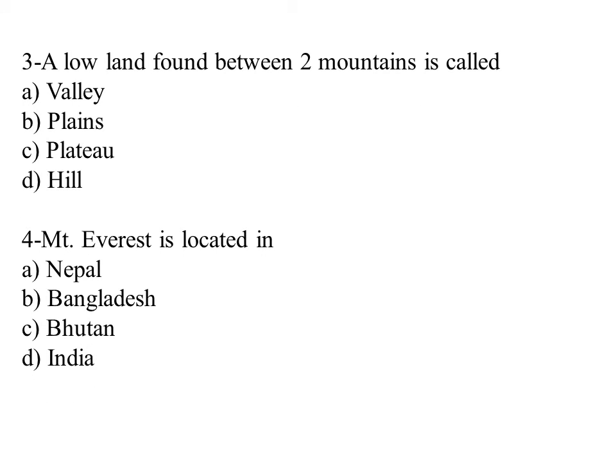Question number three: a lowland found between two mountains is called — valley, plains, plateau, or hills.